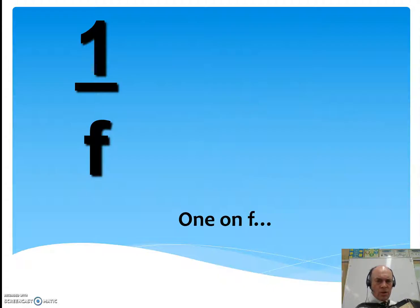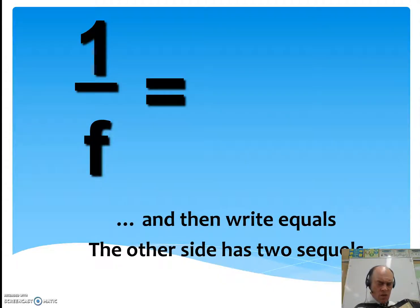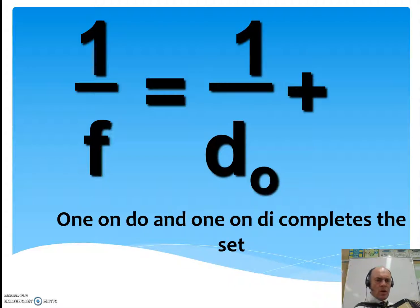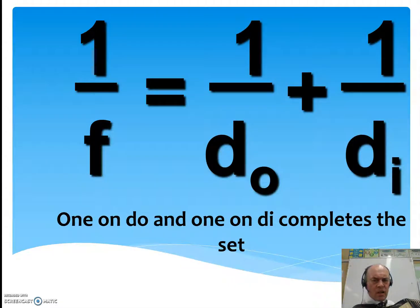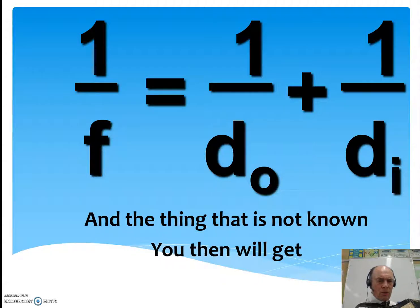A one on F, and then right equals, the other side has two sequels — one on Doe, and one on Die completes the set. Crunch this equation through, just like we always do, and the thing that is not known you then will get.